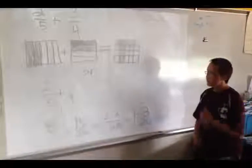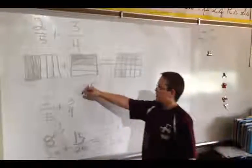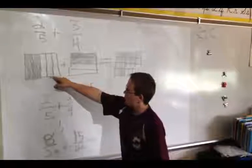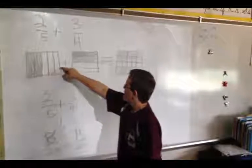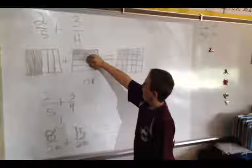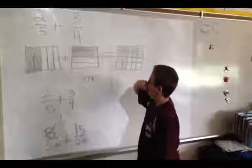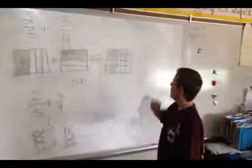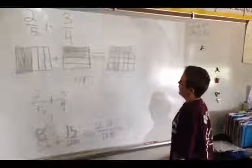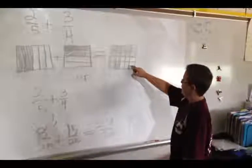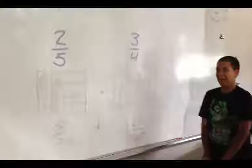Can you explain the pictures quickly? This is 2 fifths, because this is 5, and then there's the 2 filled in, plus the 4, and then the 3 filled in. The last one is, if you put those 2 together, that's what you would make. Great, thanks.